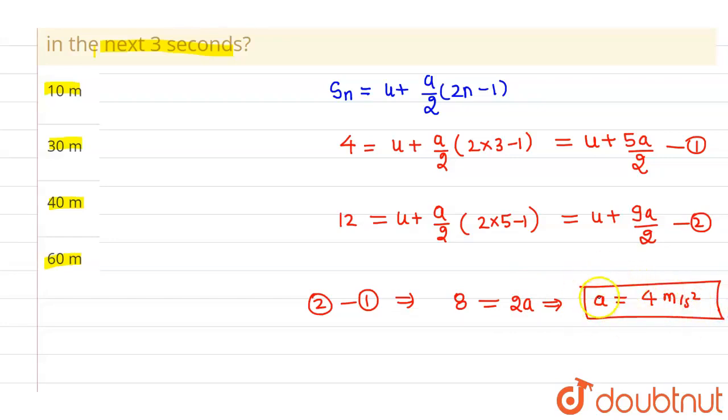And similarly, if you put a equals to 4 meter per second square here, you will be getting u equals to minus 6 meter per second. So these two things are clear.